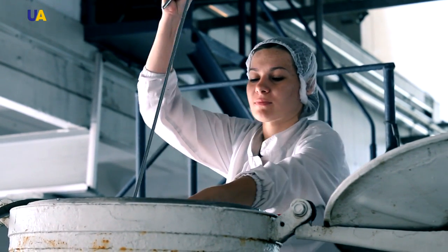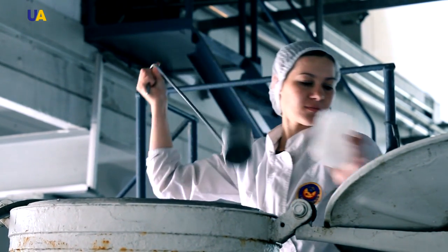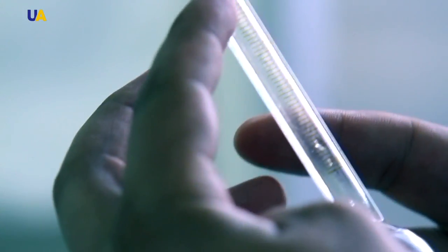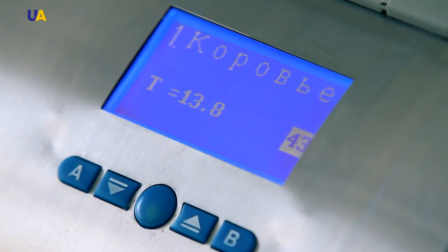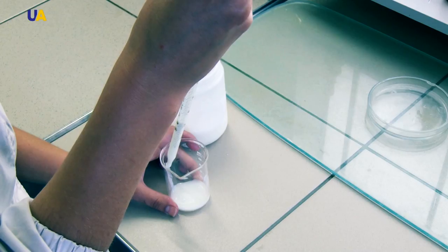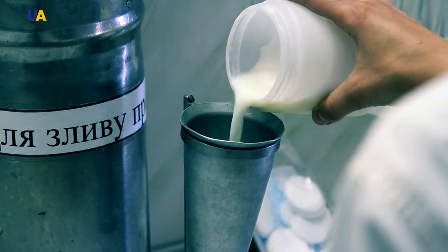The main raw material for the production of any cheese is milk. At this enterprise, it is brought in special vehicles called milk trucks. Each batch of raw materials in the laboratory passes through quality control for falsification and content of inhibitory substances.